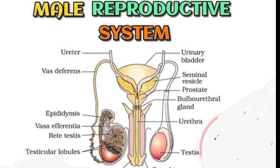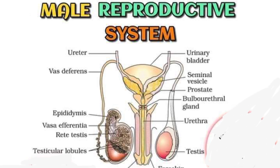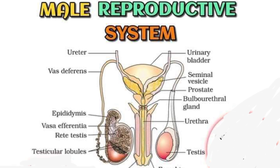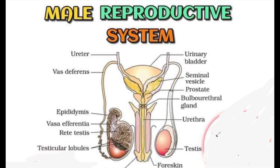Just below the seminal vesicles we have the bulbourethral gland, which is also called Cowper's gland. This bulbourethral gland causes the lubrication of the urethra and neutralizes any acidity that may be present due to residual drops of urine in the urethra.